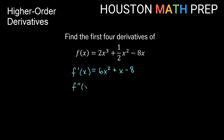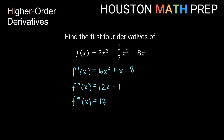Our second derivative, f double prime of x, again uses the power rule. The 2 comes out front and multiplies the 6 to give 12, going down to 12x. The derivative of x gives us 1. The negative 8 is a constant and its derivative is 0, so our f double prime of x is 12x + 1. Our third derivative, f triple prime: the derivative of 12x, thinking of it as 12x¹, gives us 12. The derivative of the constant 1 is 0, so our third derivative is simply 12.